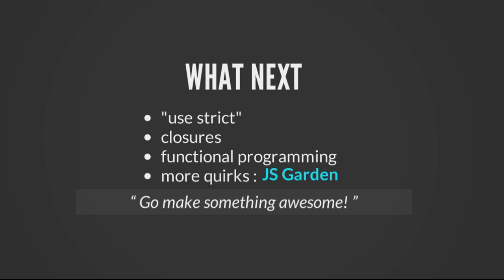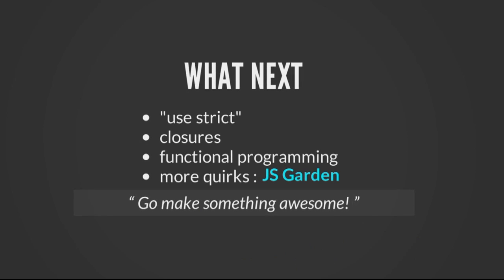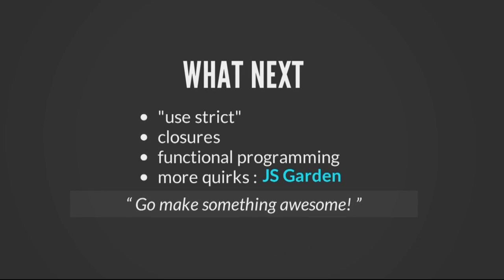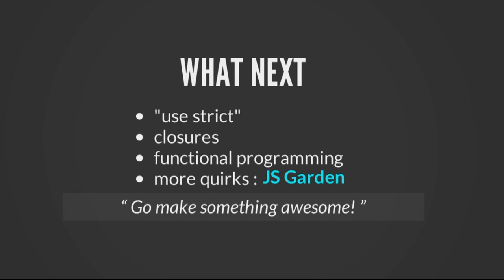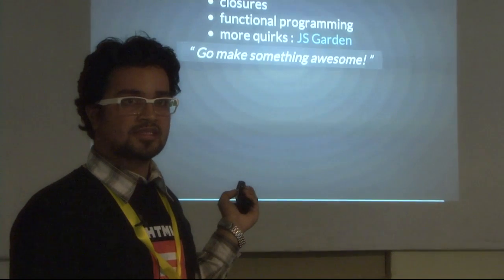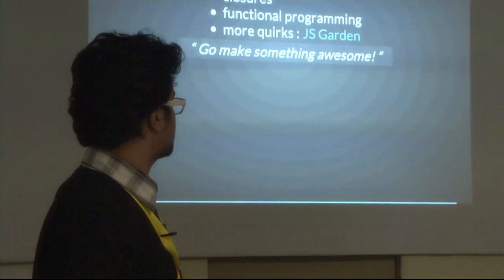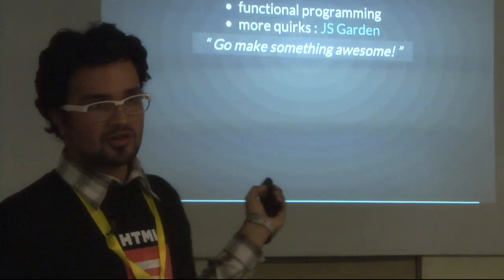What's next — we can read about strict mode in JavaScript. We should always use strict mode and most of the quirks in JavaScript just go away. We should know more about closures and functional programming. There are lots more perks in JavaScript which can be a boon if we know about them and use them wisely. There's a whole website dedicated to it named JS Garden — JavaScript Garden. Please go make something awesome.